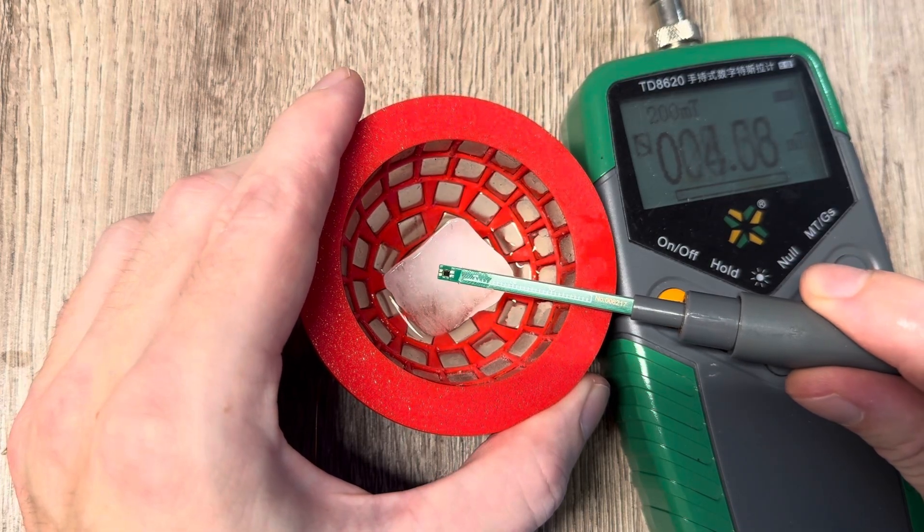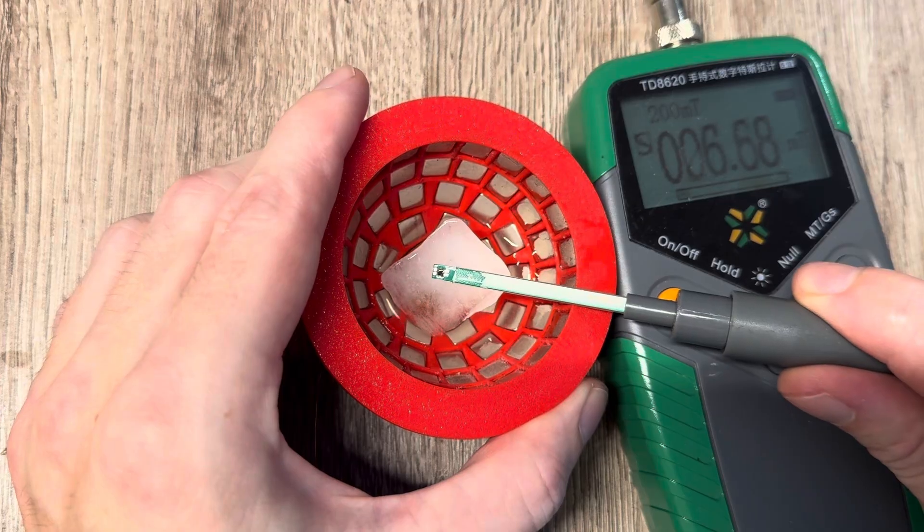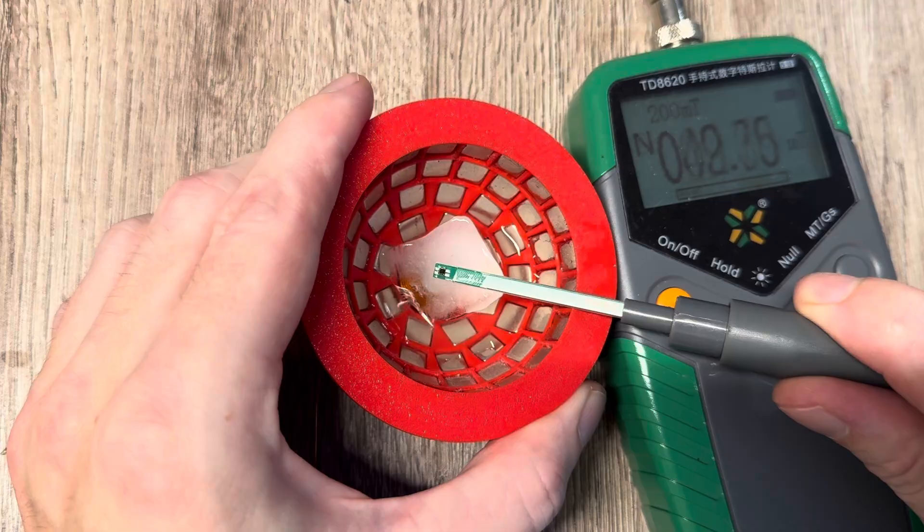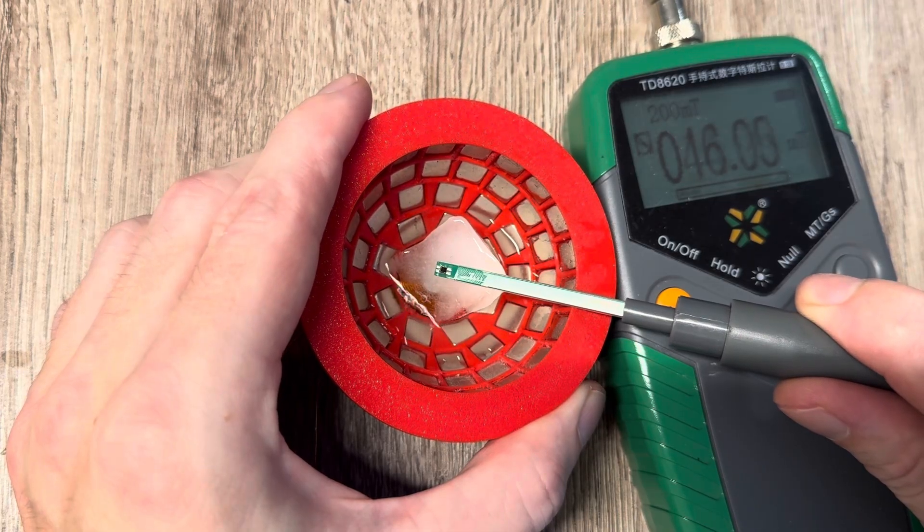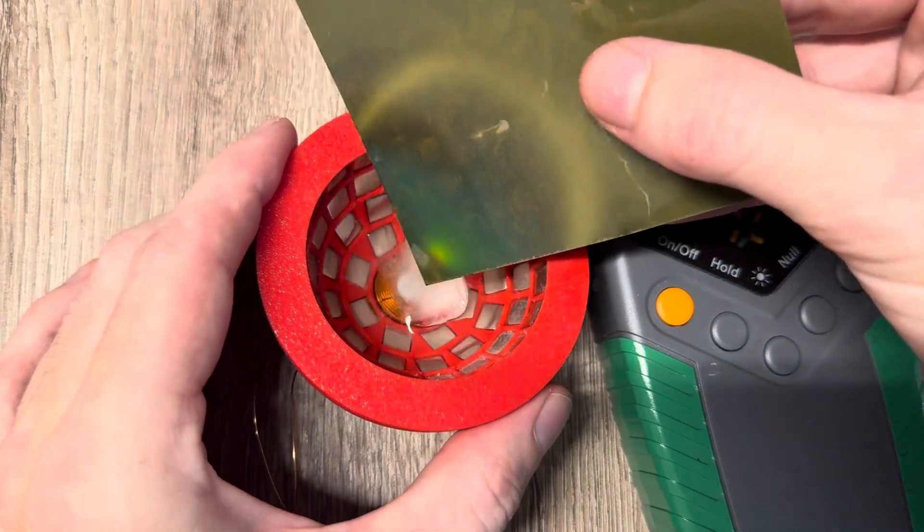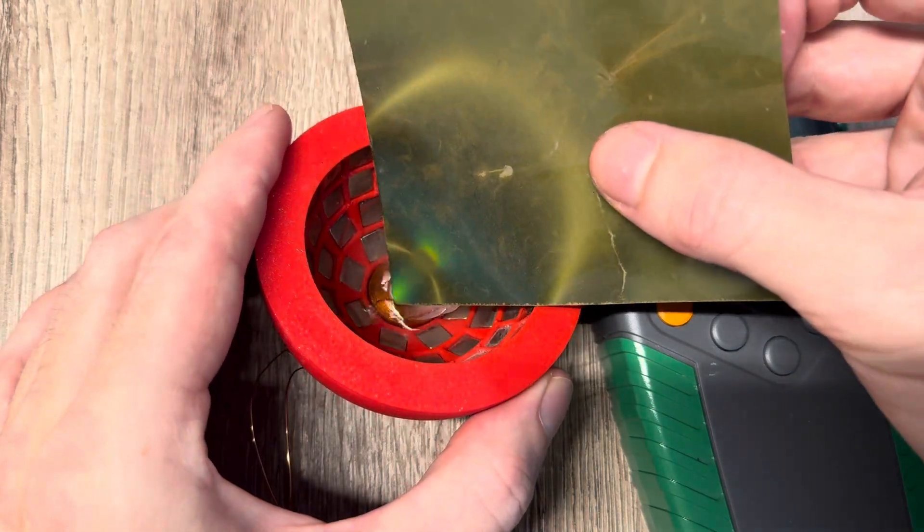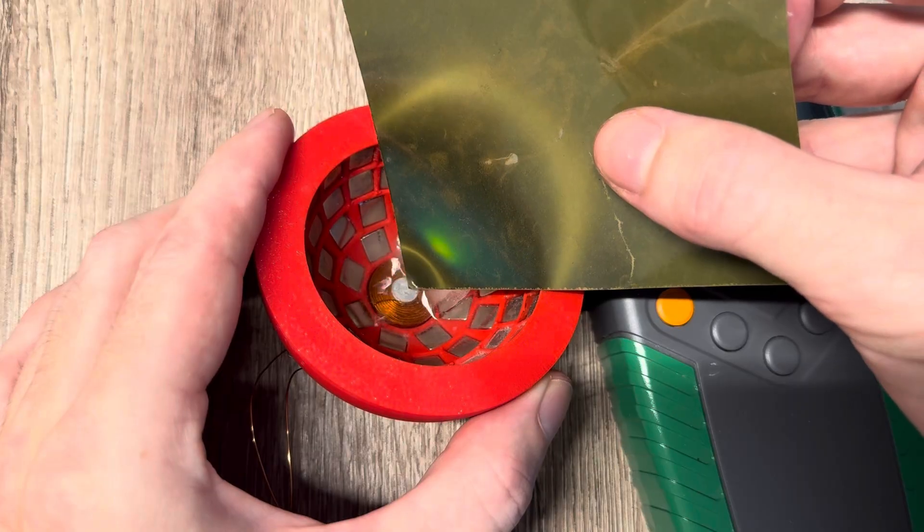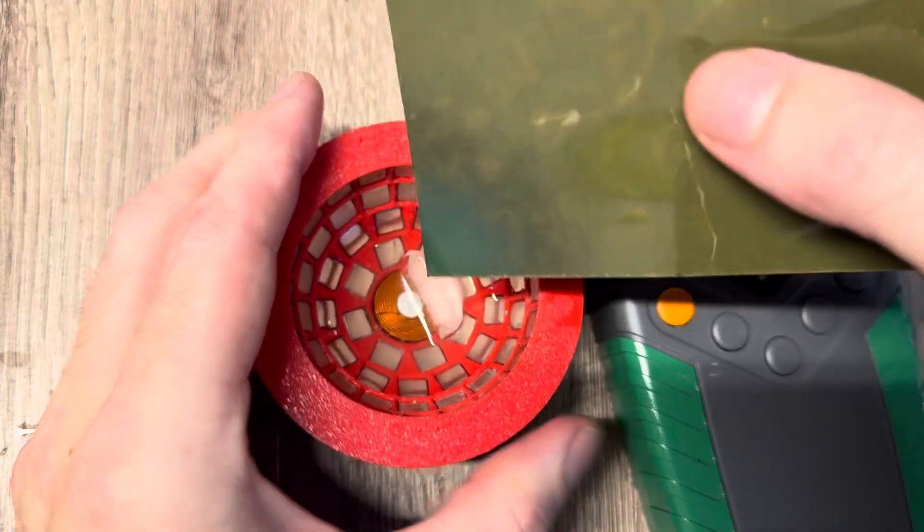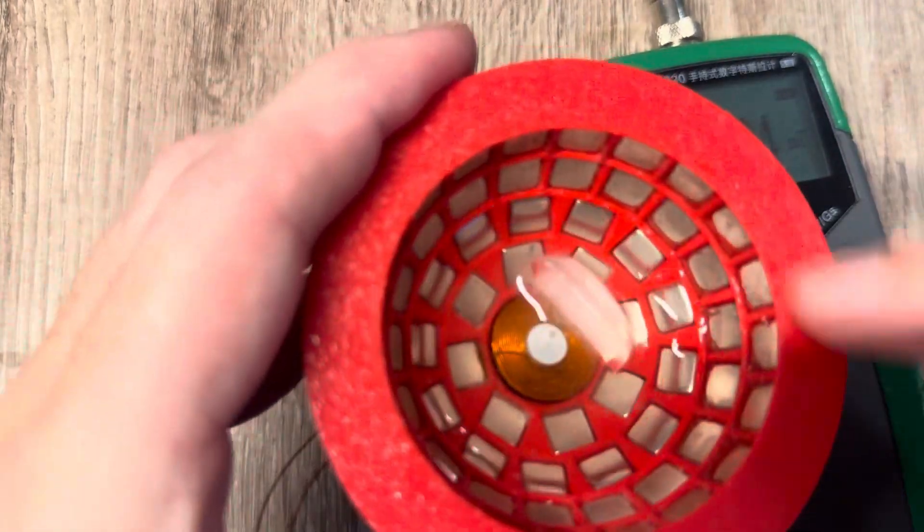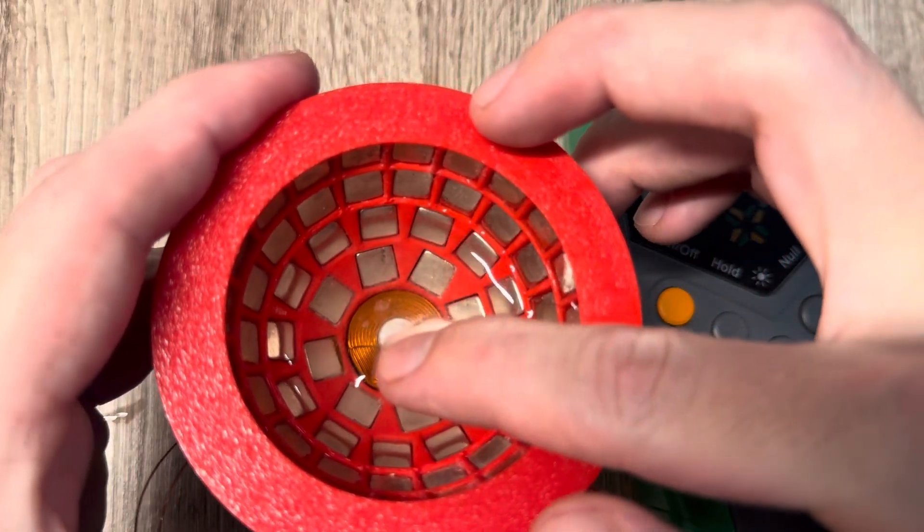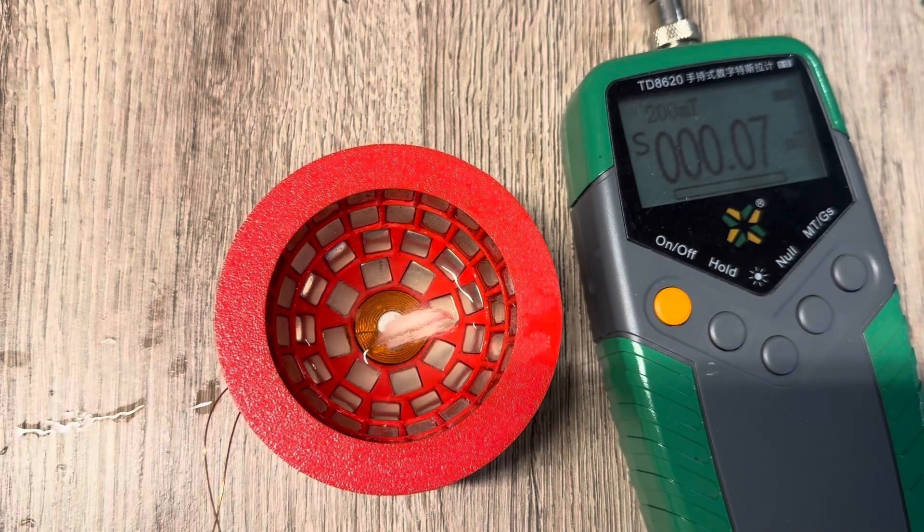You see in the gauss meter the field changing up and down constantly. If I get closer to the so-called zero point down here, currently the ice cube is still in the way, but you can see we are close to zero millitesla here at the zero point. This is what's actually happening in real time with the field. I have to turn it off again before I burn down everything because as you can hear the water is still boiling underneath here. It's insanely hot.